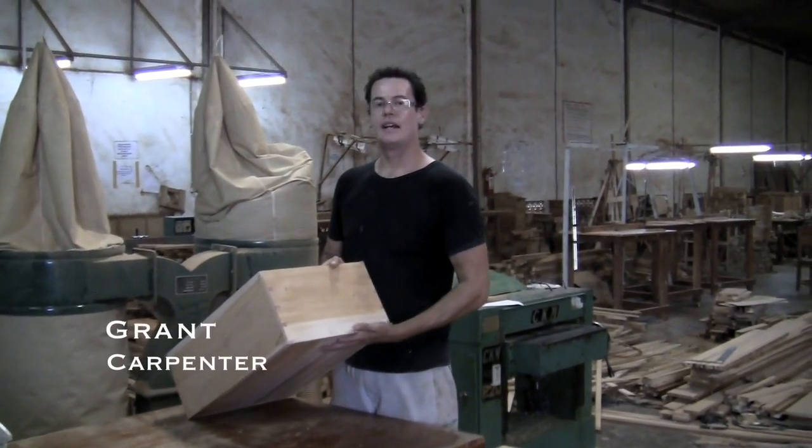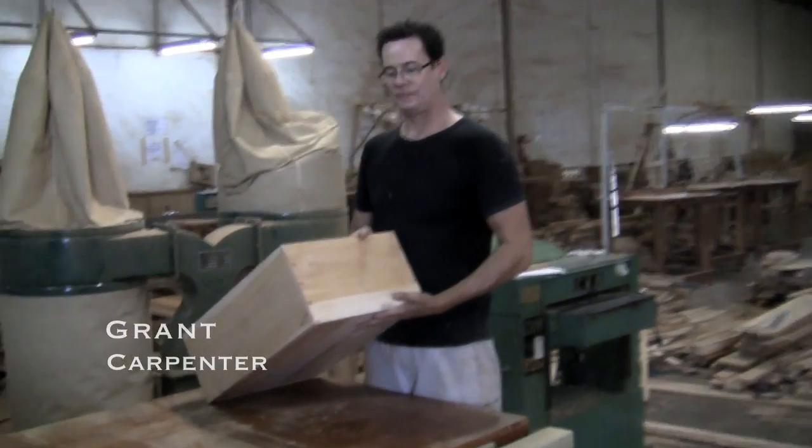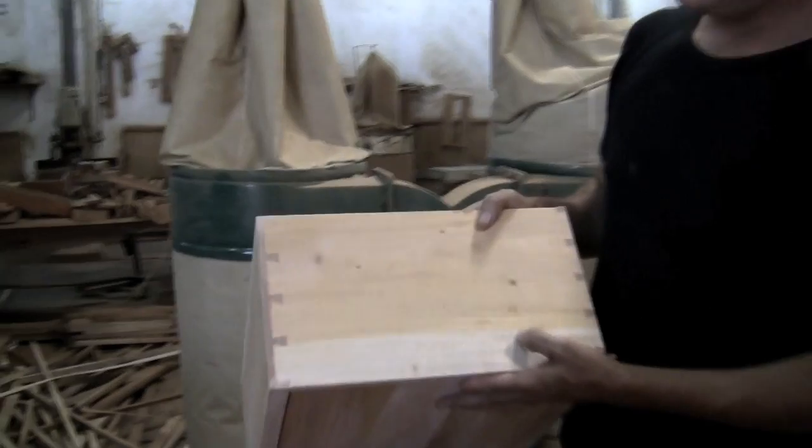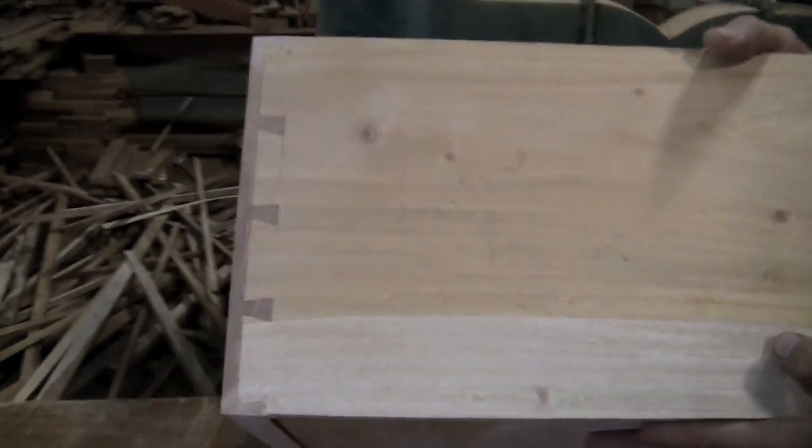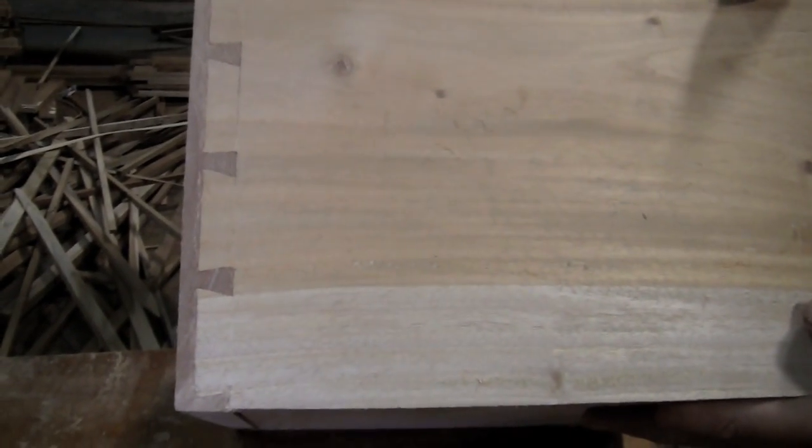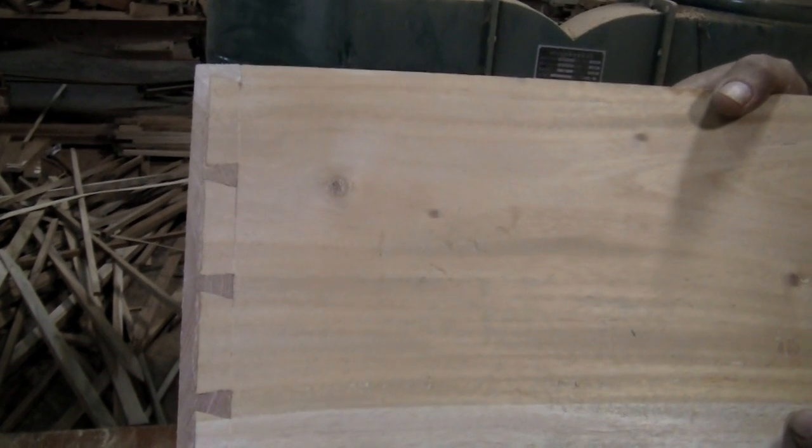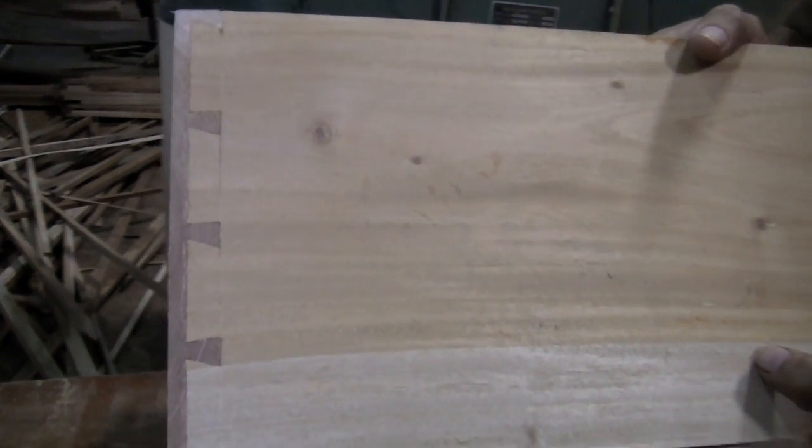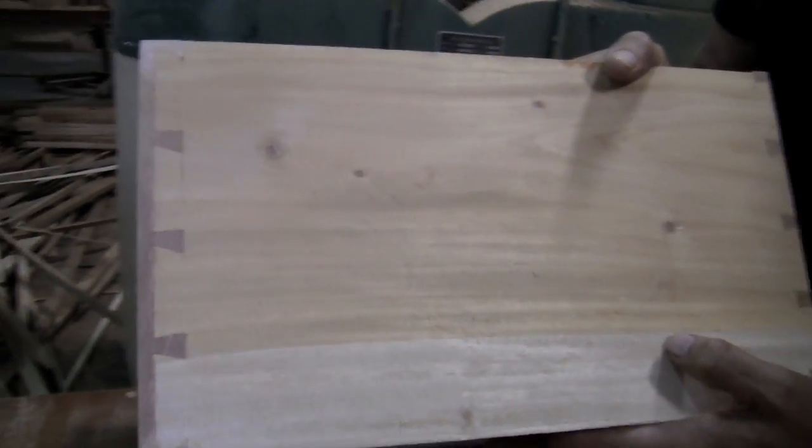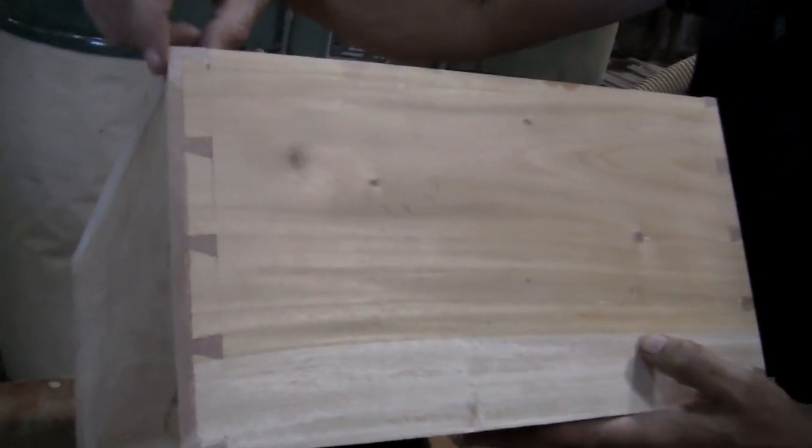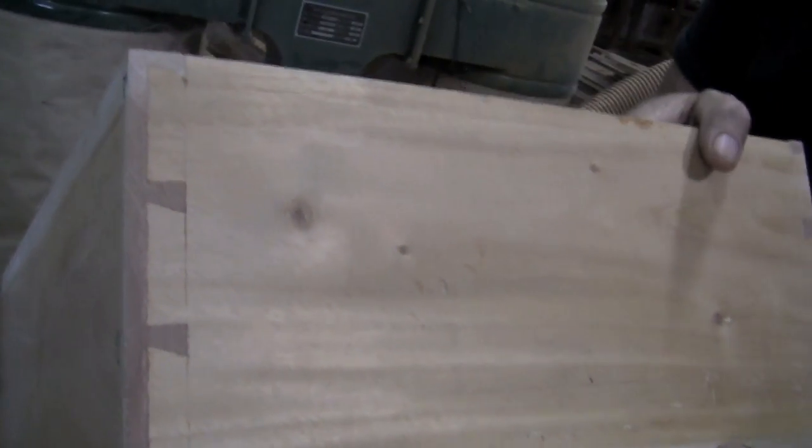Here's an example of one of our hand cut dovetails on a mahogany drawer. It's very neat but still retains that handcrafted quality. The dovetail joint is used on drawers because it is the strongest way of joining two relatively thin pieces together at the corner.